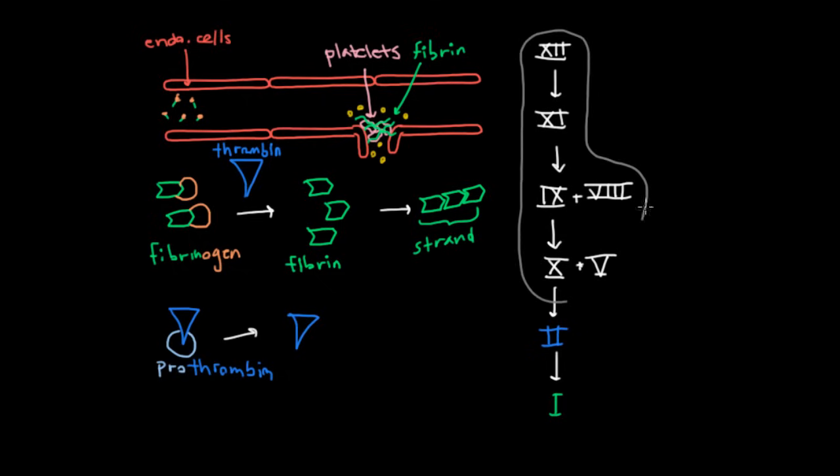And it turns out that we call this part here the intrinsic pathway. And we can talk about what that means later, but for now, let's just give it its name. But what's perhaps more important to be clear about is that in this drawing, 12 is not actually becoming 11, and 11 is not actually becoming 9. What's happening is that 12, when it's activated, is a catalyst to convert 11 from its inactive form into its activated form, which will draw 11a. And then once 11 is activated, it serves as a catalyst to convert 9 from its inactivated form into its activated form.